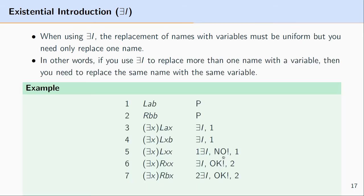Here are a number of instances of existential introduction — some are acceptable, some are not. At line three, we applied existential introduction to line one, replacing the name B with an existentially quantified variable X. This is an acceptable use. Line four is also acceptable: we're replacing the name A with the existentially quantified variable X, and leaving B alone.